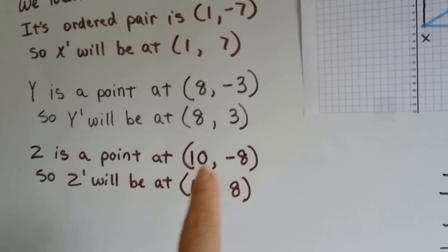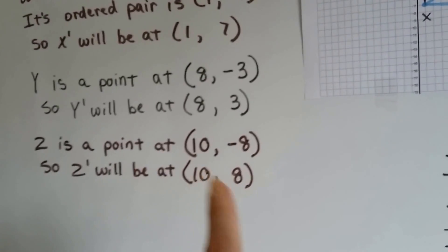And z is at 10, negative 8. So z prime will be at 10, positive 8.